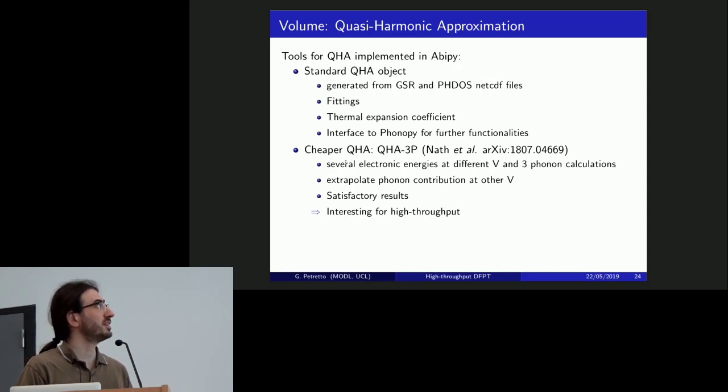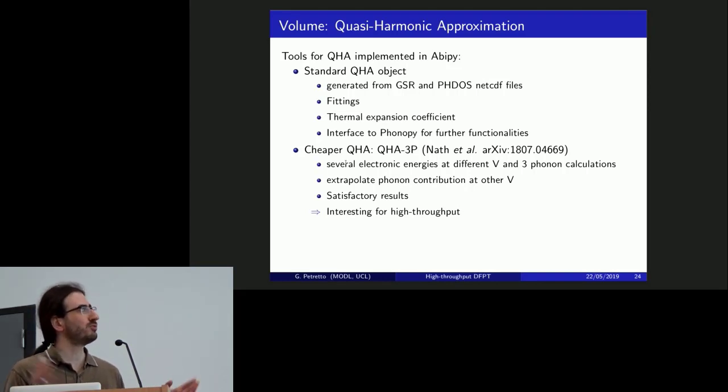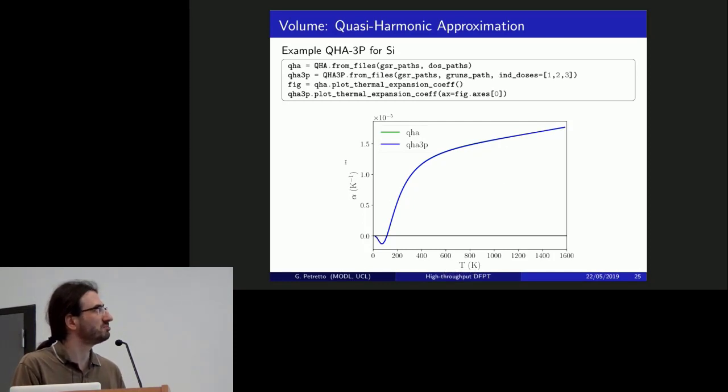And maybe some quasi-harmonic approximation as well. Again, there are some post-processing tools available in ABiPy. And for the high-throughput part, this might come somewhat with the Gruneisen parameters as well. I've implemented this post-processing in ABiPy where you basically consider several volumes for your quasi-harmonic approximation, but you just do the electronic energies for several of them, but only three phonons and extrapolate the values to other volumes, expecting that the contribution might still be fine. Of course, this is not advisable for a detailed study of the material, but if you want to just make a high-throughput screening, this is something that might be useful. And this is just a test that I made. And basically, you cannot see the difference with the standard quasi-harmonic approximation for the thermal expansion coefficient, so it's at least reasonably fair for high-throughput screening.